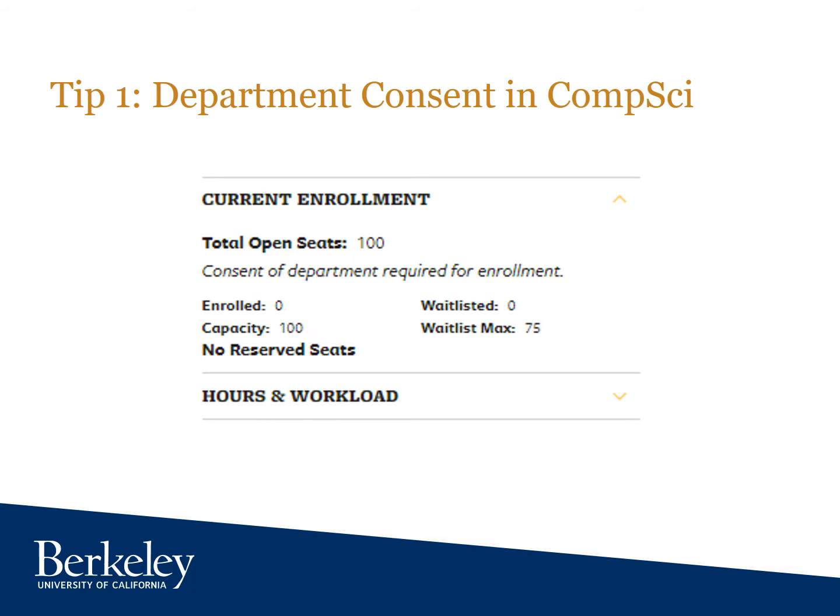With computer science, when we intend to offer a class but we're unable to open it for some reason right now, we will set it for department consent. You'll see that setting either on classes.berkeley.edu or within Cal Central if you go to enroll in the class and it kicks up an error message. The recommended action when you see this message is simply to be patient and periodically check back to see the class has been opened for enrollment. When we're able to open the class, we will remove this setting and post to the EECS 101 section of Piazza.com.